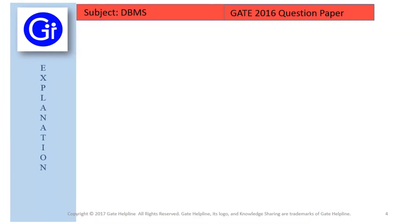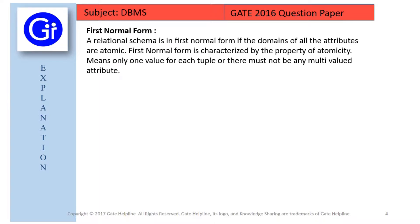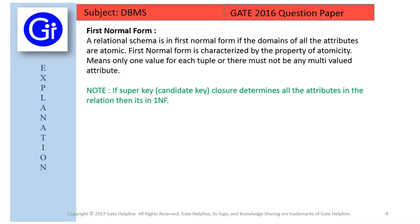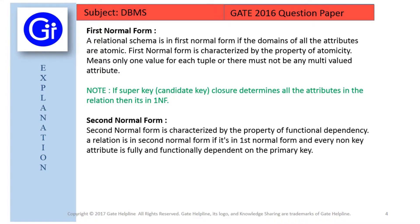Now we will see the explanation to this question. Please watch this video till the end so you can understand the concept behind why GATE asks this type of question. First, we start with first normal form. A relational schema is in first normal form if the domains of all attributes are atomic — meaning only one value per tuple and no multivalued attributes. If the candidate key closure determines all attributes in a relation, it is in first normal form.